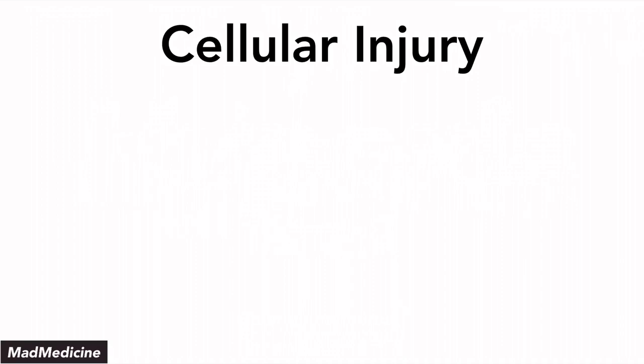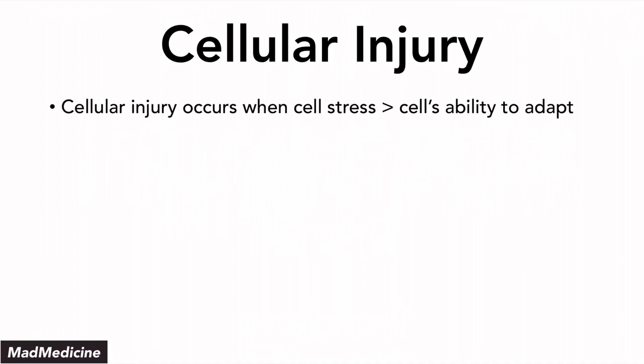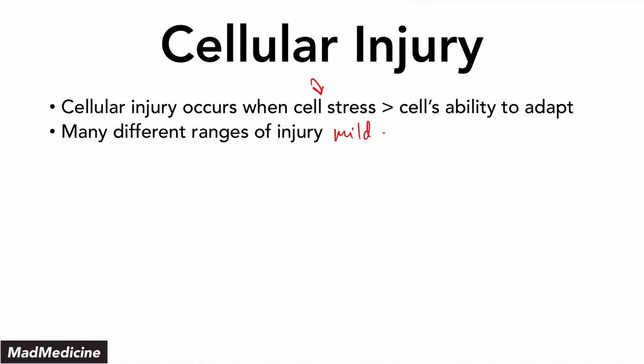Our cells can get injured when the level of stress exceeds our cells' ability to adapt to that stress. Essentially, when our cells are under an amount of stress that they cannot handle, our cells are going to get injured. That is very important to understand. Now, there are many different ranges to the injury that our cells undergo. You can have mild injury, which could be essentially reversible, or you can have severe injury, which is irreversible.